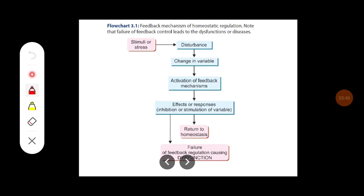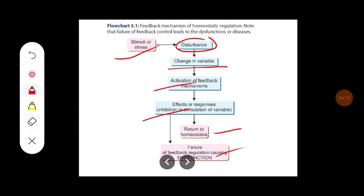This is the feedback mechanism of homeostatic regulation. When any stimuli or stress leads to a disturbance in the body environment, there will be a change in some variables, which activates the feedback mechanism. Through effector response, there can be inhibition or stimulation of the variable, helping return to normal homeostasis. Failure of this process can lead to dysfunction of the organ or the body.